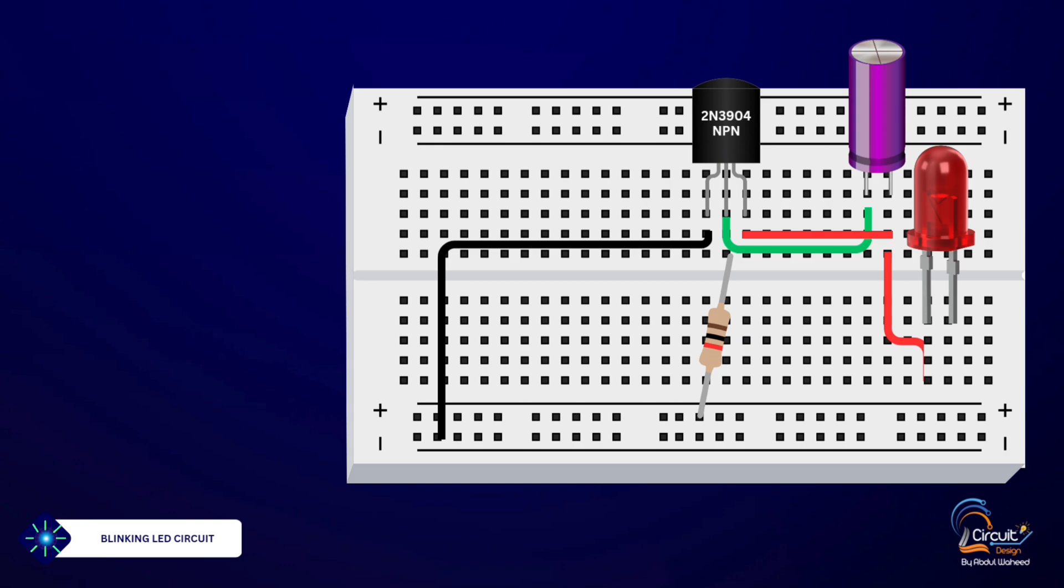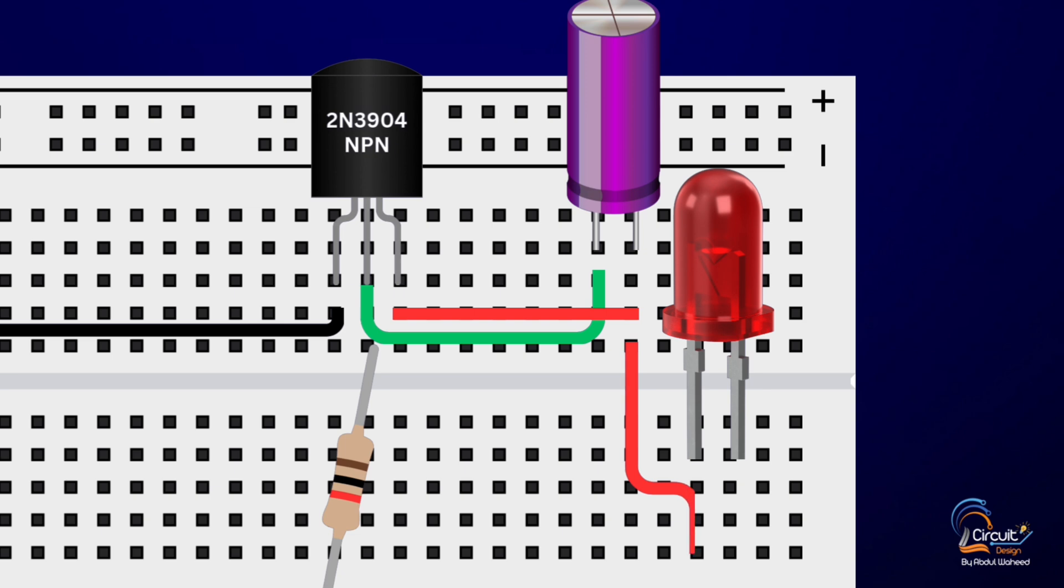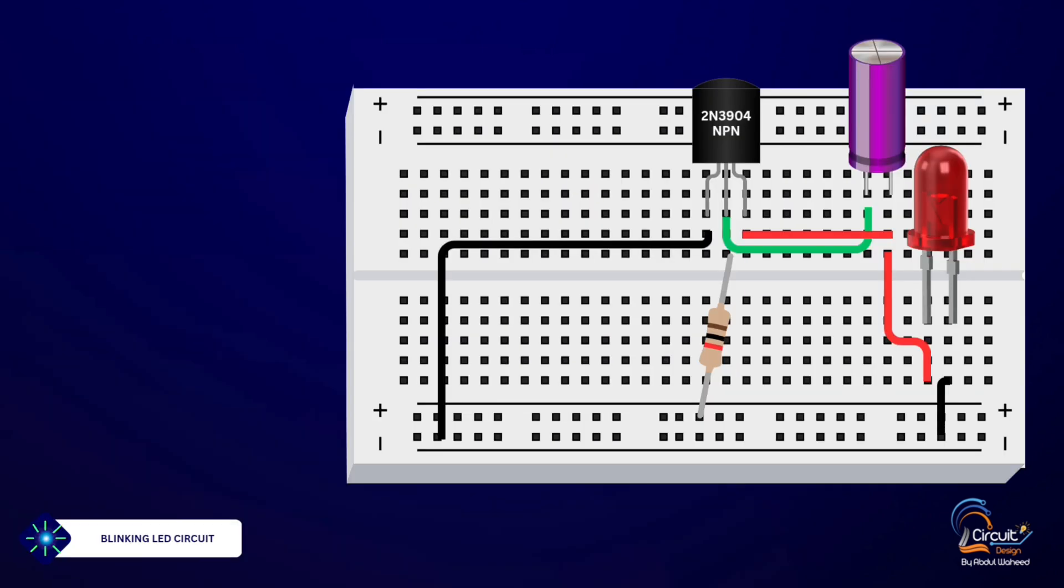Finally, connect the light emitting diode. Attach the anode positive leg of the LED to the collector of the transistor and the cathode negative leg to the ground rail.